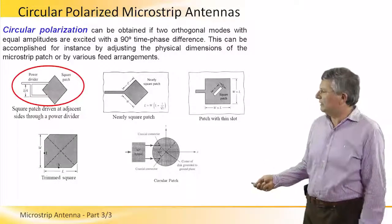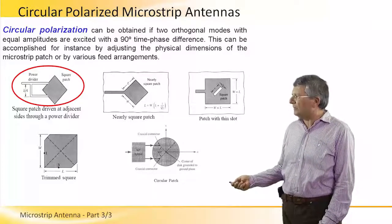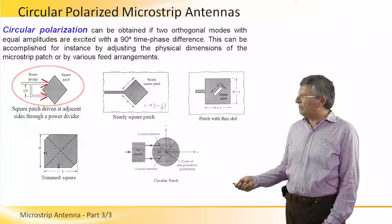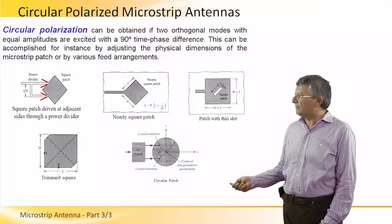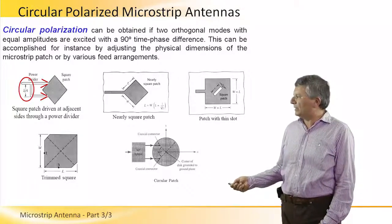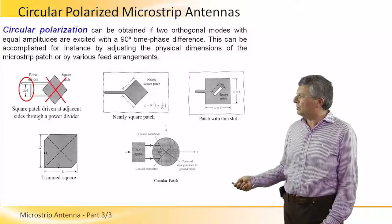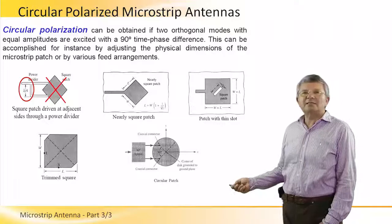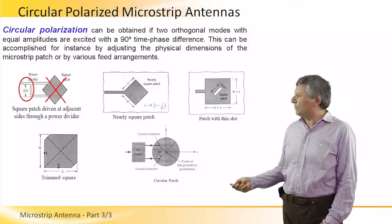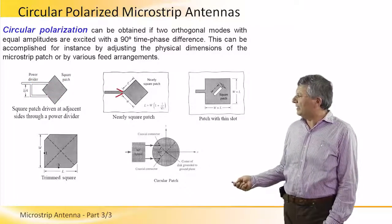For instance, if we take a square patch antenna and feed two adjacent edges with a 90-degree phase difference — or lambda over four in terms of transmission line delay — we obtain excitation of two orthogonal modes with 90-degree phase difference, and therefore we obtain radiation of circular polarization.